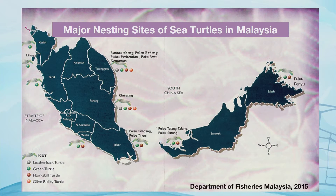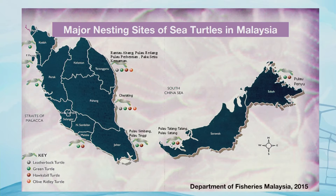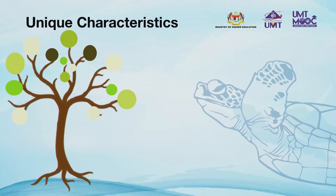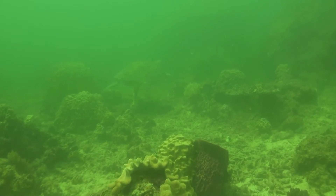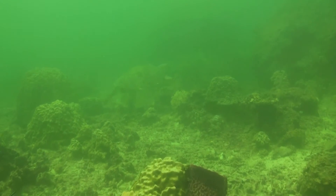In Malaysia, breeding sites of sea turtles can be found in Sabah, Sarawak, Terengganu, Pahang, Johor, Melaka, Perak, and Penang. Being ancient animals, sea turtles have unique characteristics.